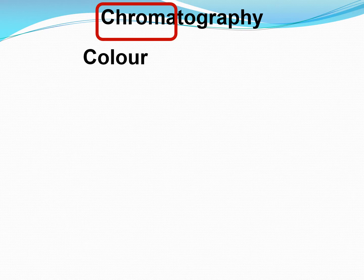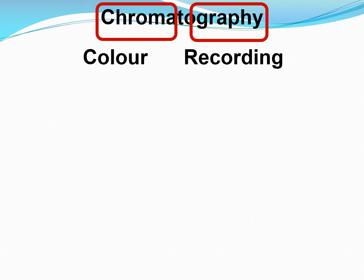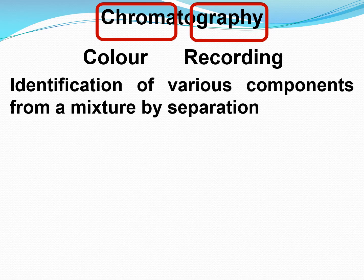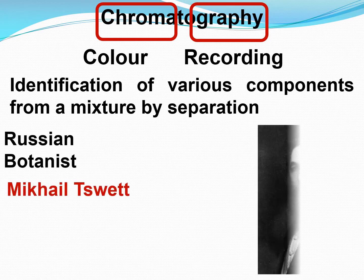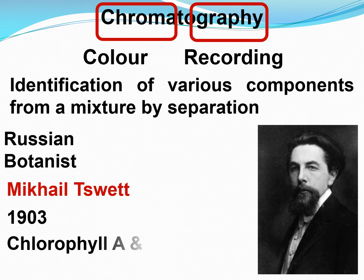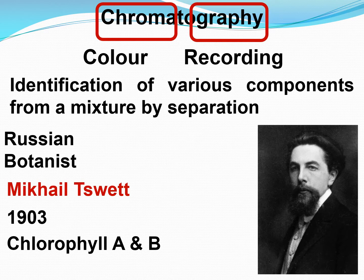The term chromatography is a combination of two words: chroma meaning colour and graphy meaning recording. So colour recording is the actual meaning of the name. This technique of identifying various components from a mixture by separation was discovered by a Russian botanist named Mikhail Swet, way back in 1903, and he separated and identified chlorophyll A and B. That was the first chromatographic separation.